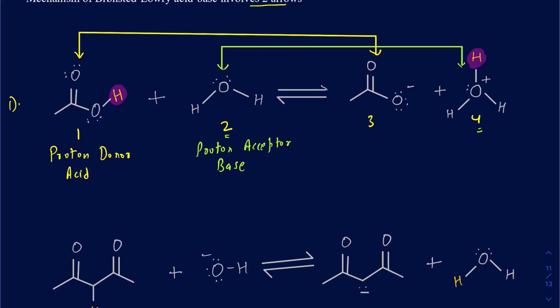Any time an acid loses a proton, what it makes on the other side is the conjugate base. So compound 3, which resulted from the acid, is your conjugate base. And compound 4, after the base gained a proton, is acting as your conjugate acid. Make sure you're able to identify the acid, base, conjugate acid, and conjugate base in any given reaction.